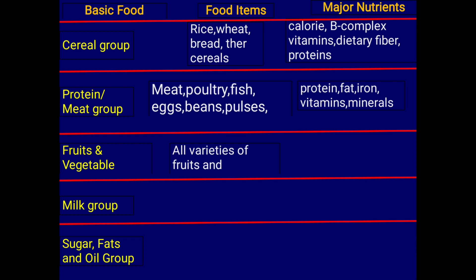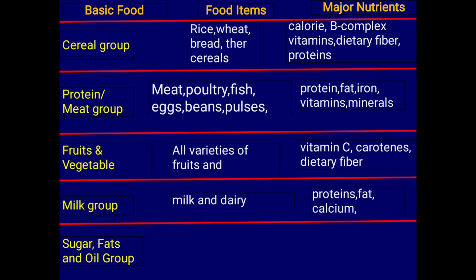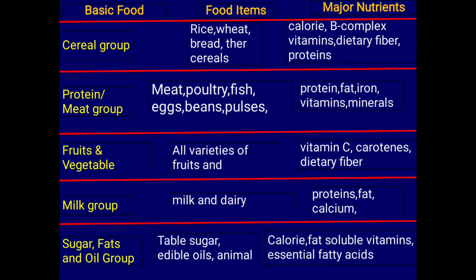Fruits and vegetables provide vitamin C, vitamin A as beta-carotene, and dietary fibers — vegetables are especially rich in dietary fibers. The milk group includes dairy products like butter and cheese, providing protein, fat, calcium, and riboflavin. Sugar — mainly table sugar added to food and tea — and edible oils and animal fats mainly provide calories, fat-soluble vitamins, and essential fatty acids.